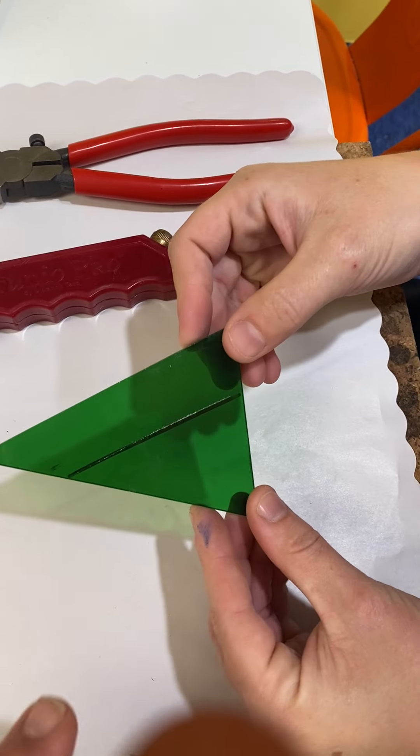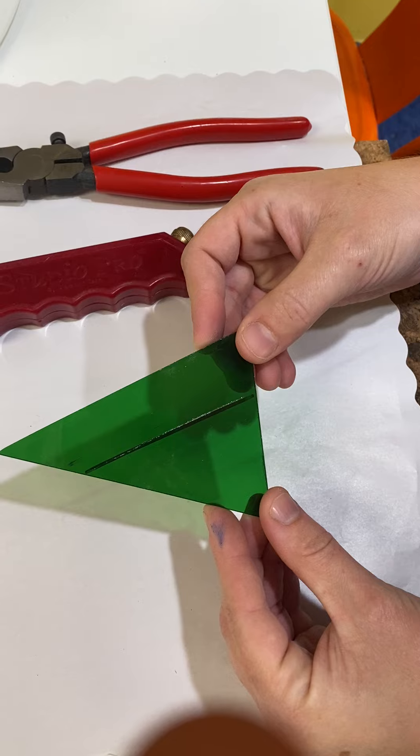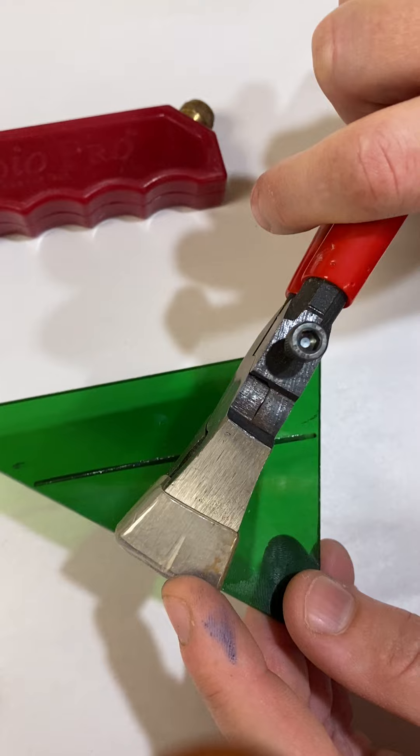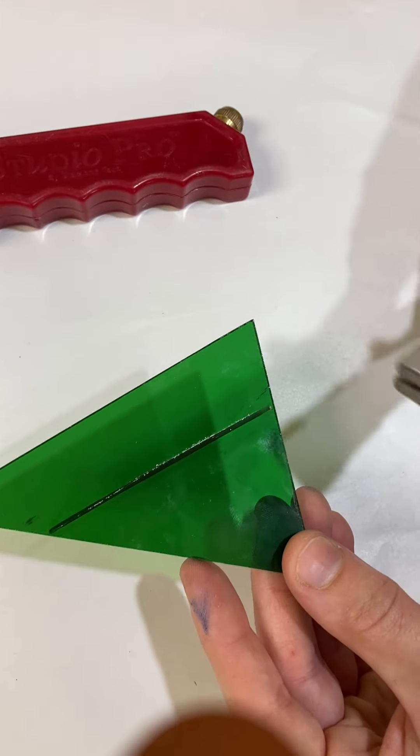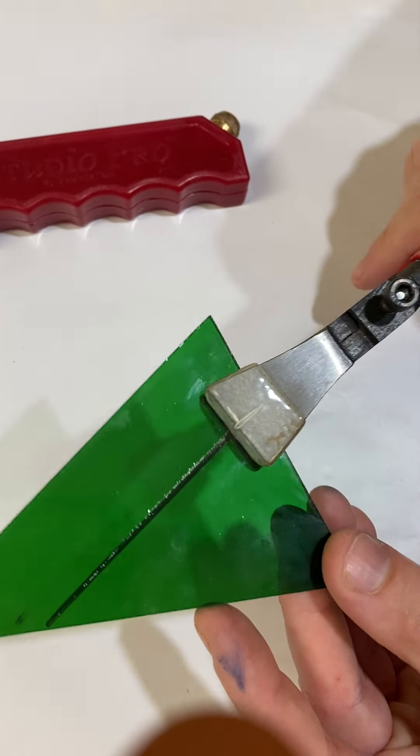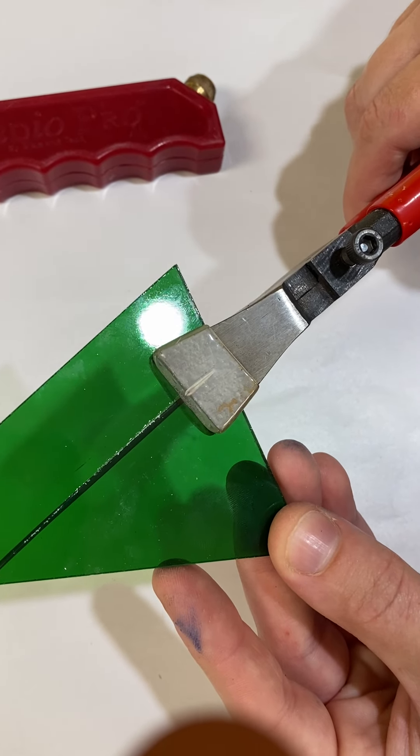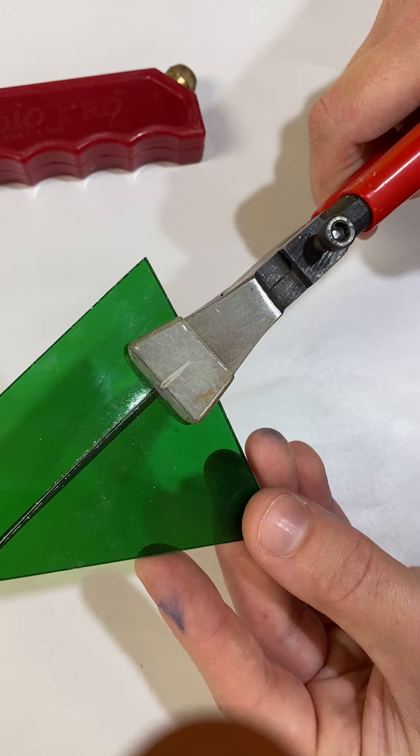It's important that you get the score at the beginning. Now she's going to take the pliers, and you'll notice the pliers have a mark right here. That's what you want to line up with your scored line. You can do it right at the edge. You don't have to go far in, and then you're just going to press it. Doesn't even have to be heavy.